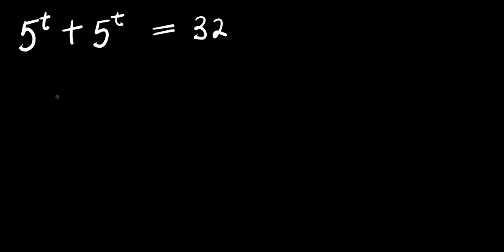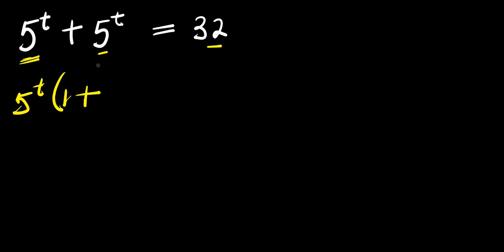Hello, how to solve this exponential problem: 5 to the power of t plus 5 to the power of t equals 32. We are solving for the value of t that satisfies this equation. So let's factor 5 power t — we have 5 to the power of t times, dividing through, we get 1 plus 5 power t divided by 5 power t, which gives 1.